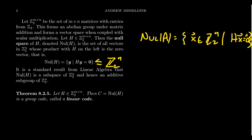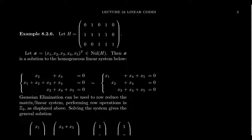Basically, if we take any subgroup of Z2^n, we can make a group code out of that — a code which is also a subgroup. But if we construct the group code using the null space of a matrix, we call that a linear code. Let's take an example of such a thing.